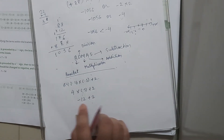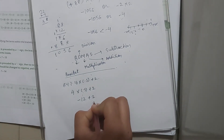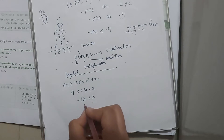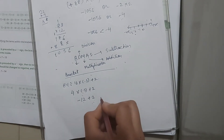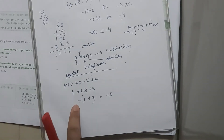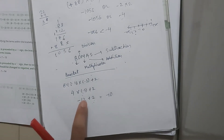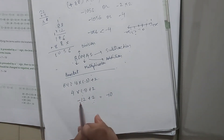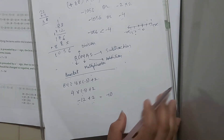Now if we have one term positive and one term negative, we simply subtract. When we subtract 2 from 12, that is 10 and the sign is negative. While having one positive term and one negative term, we subtract the terms and put the sign of the greatest term. Here the greatest term is minus 12, so we put the negative sign. Our answer is minus 10.